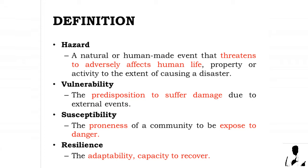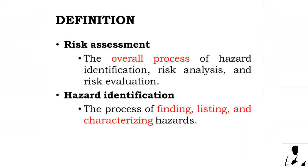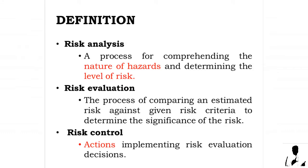Susceptibility is the proneness of a community to be exposed to danger. Resilience is the adaptability and capacity to recover. Risk assessment is the overall process of hazard identification, risk analysis, and risk evaluation. Hazard identification is the process of finding, listing, and characterizing hazards. Risk analysis is a process for comprehending the nature of hazards and determining the level of risk. Risk evaluation is the process of comparing an estimated risk against given risk criteria to determine the significance of the risk. Risk control refers to actions implementing risk evaluation decisions.